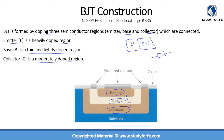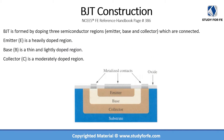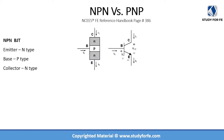In the case of a junction diode we only had one junction, but in a BJT you can see more than one junction. There are basically two different types of BJTs: an NPN BJT and a PNP BJT. In the case of an NPN BJT, the emitter is an N-type region, the base is a P-type region, and the collector is also an N-type region.